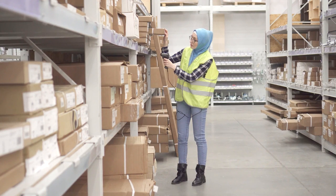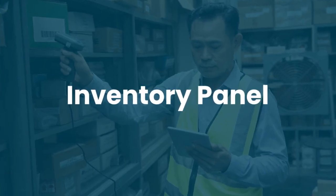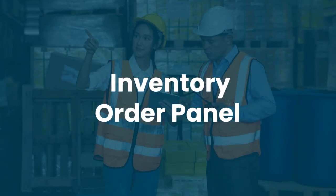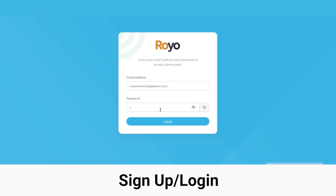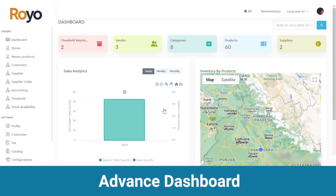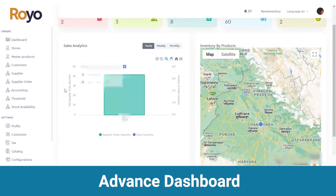Our inventory management software consists of an inventory panel and an inventory order panel. First is the inventory panel. Log in with your credentials and you will be redirected to the dashboard directly. In the dashboard you can view the threshold warnings, total number of vendors, categories, products and suppliers, with sales analytics yearly, weekly and monthly.